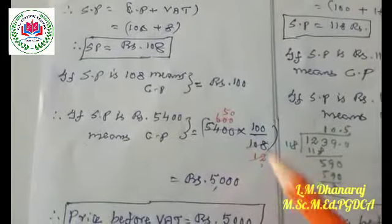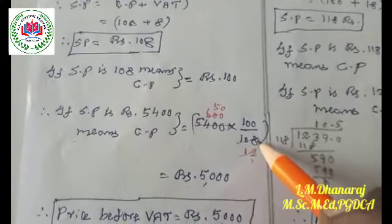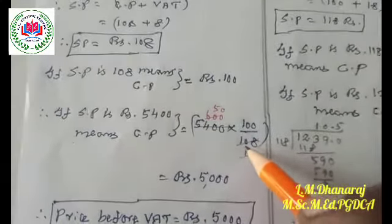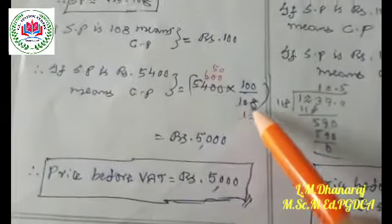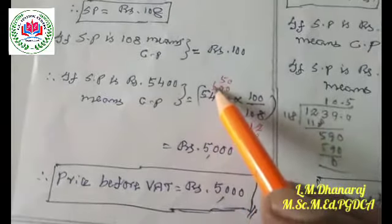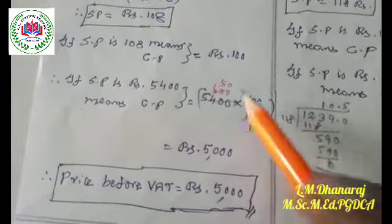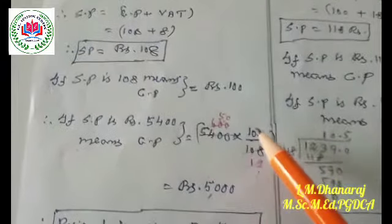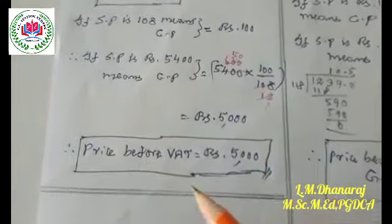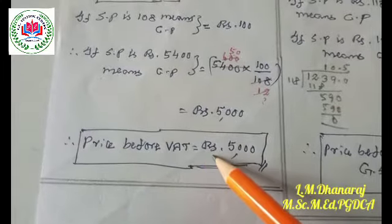If the selling price is rupees 108, the cost price is rupees 100. If the selling price is rupees 5,400, the cost price equals 5,400 into 100 divided by 108. Cancelling using the 9 times table — 9 into 600 is 5,400 — it simplifies to 50 into 100, which is rupees 5,000. So the price before the VAT is rupees 5,000.